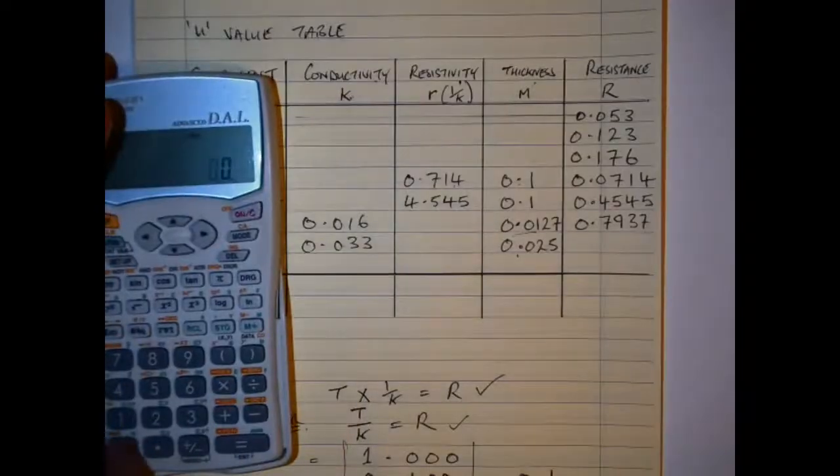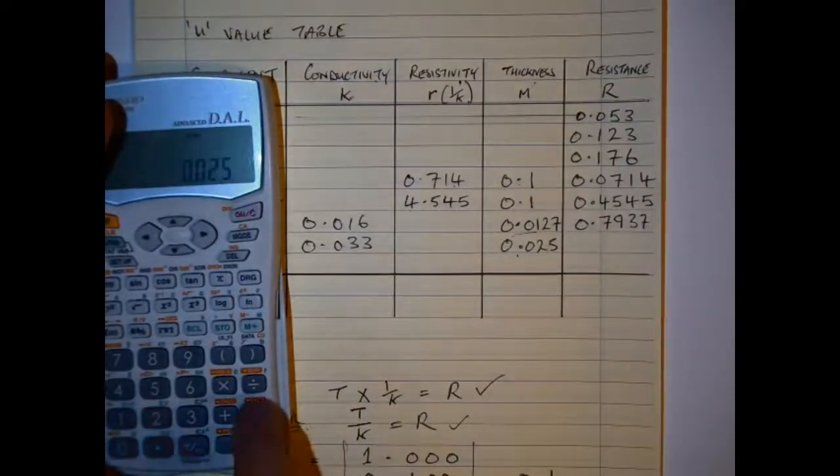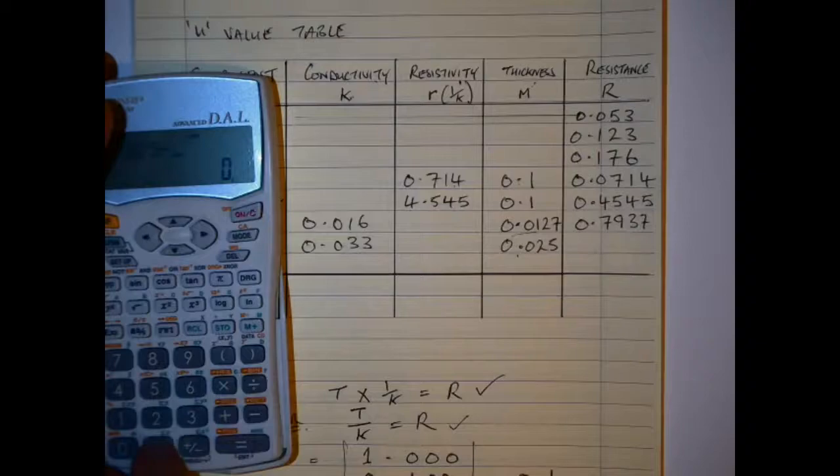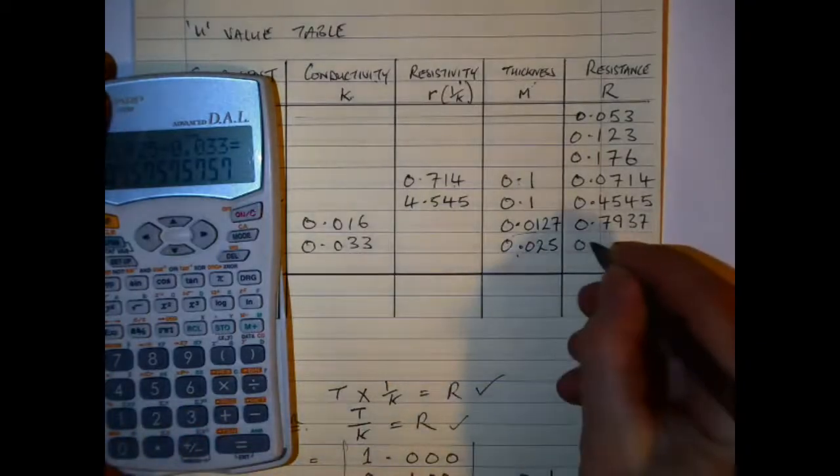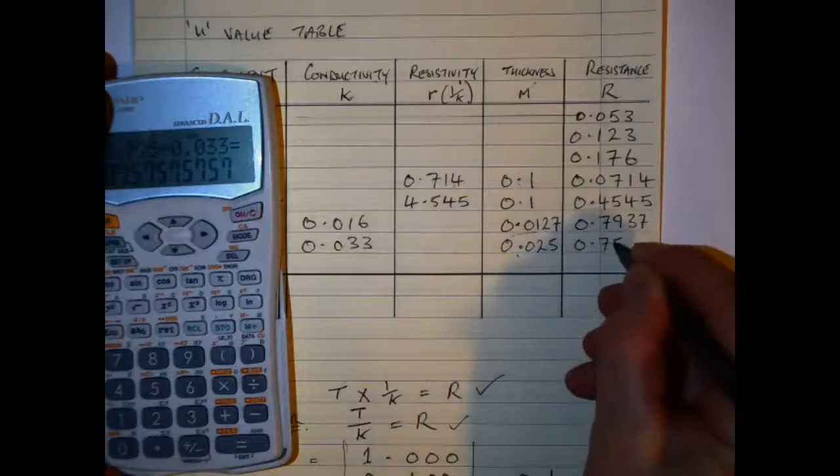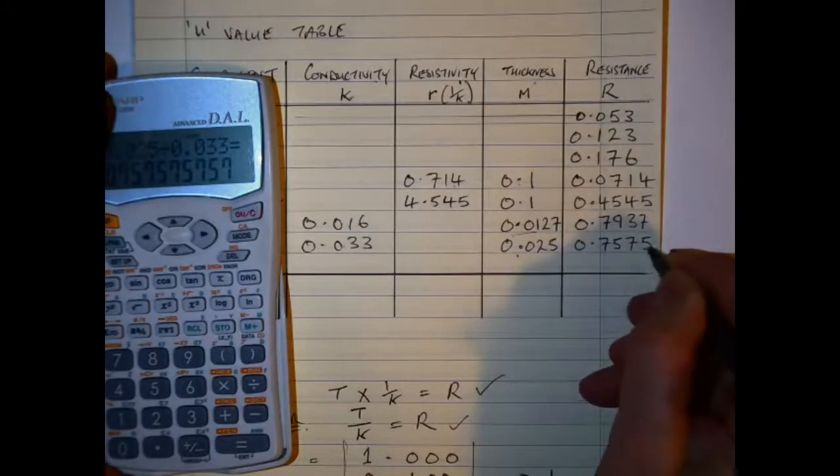Then we'll do the same thing again here - we'll take our thickness, divide it by the conductivity, and we've got our value of 0.7575.